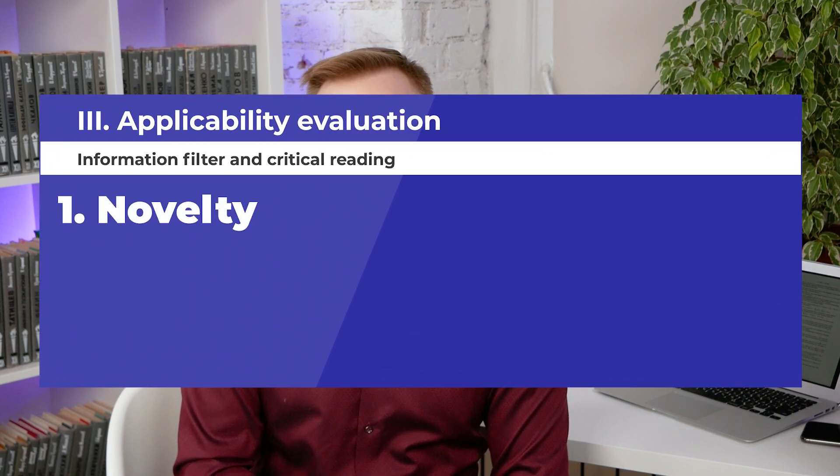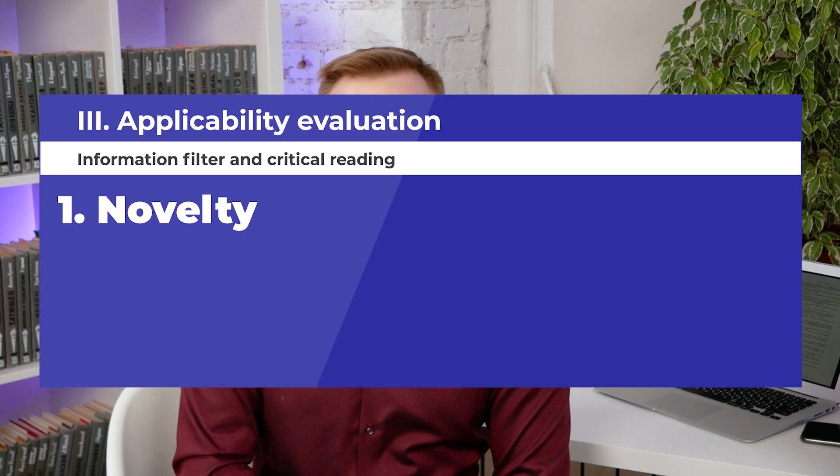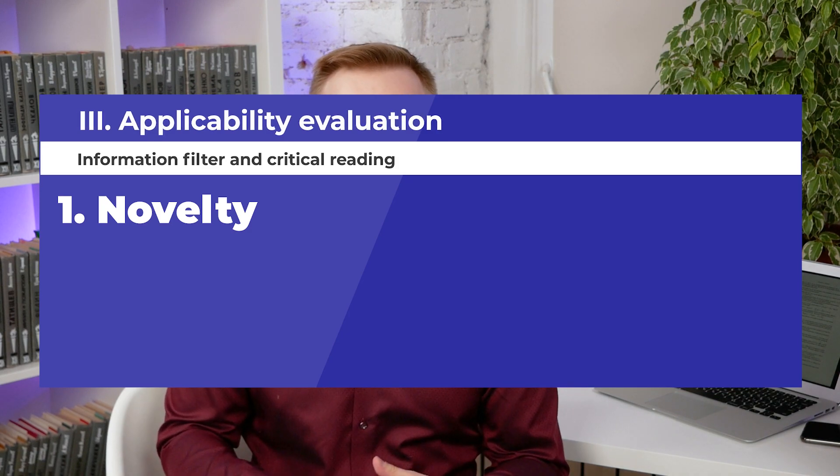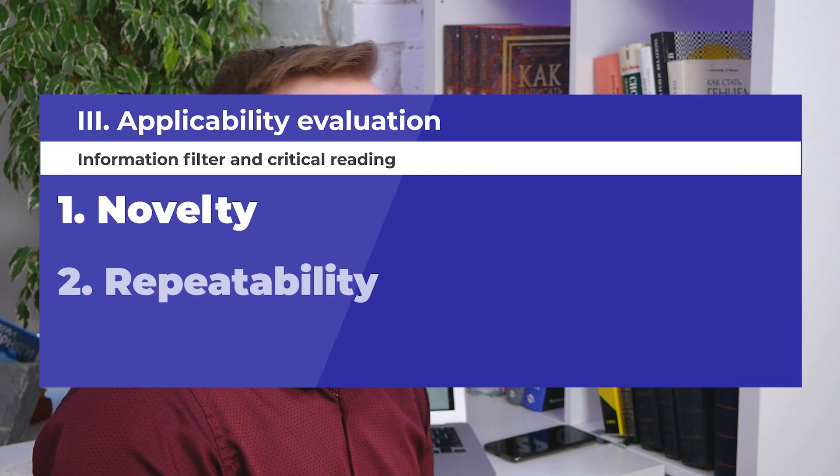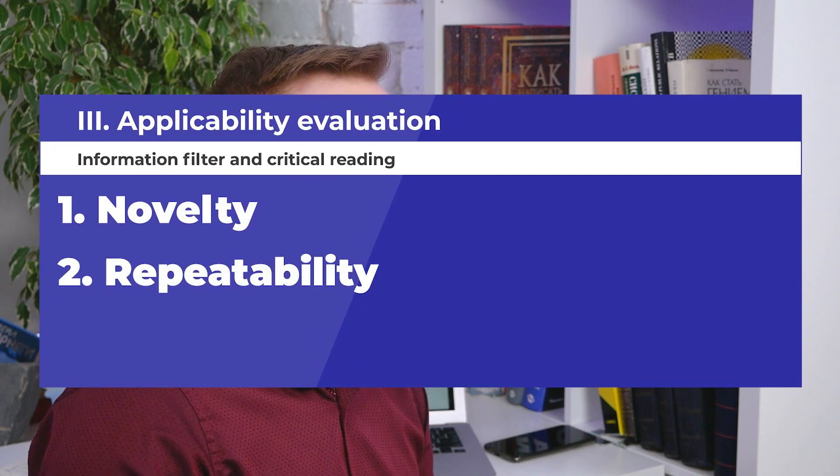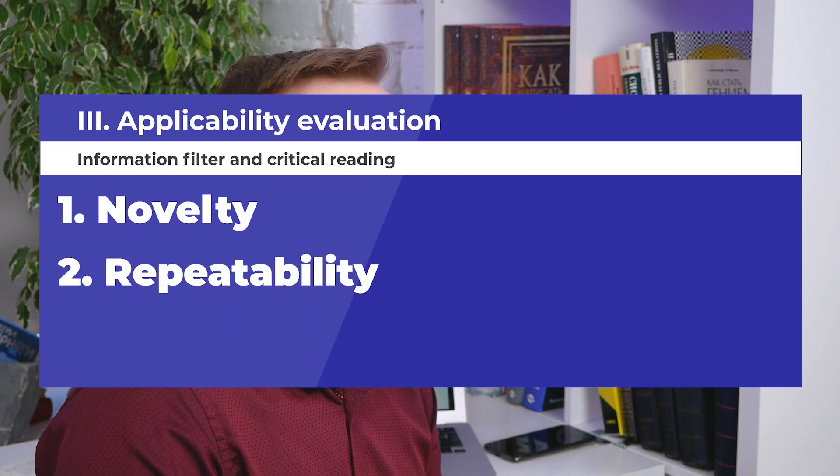The third group is an applicability evaluation. The first point here is novelty — a piece of information should have non-obvious consequences. If it is obvious for a student, it's not a valuable source for the professional. The idea that you need to promote your website or know your audience is obvious; what matters is non-trivial techniques and specific ideas of positioning and standing out. The second point is repeatability: is it possible to repeat the transformation step by step with the same result? If the result is sustainable, similar actions lead to similar results.